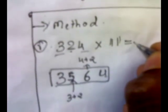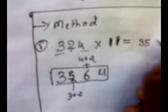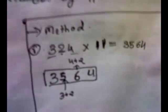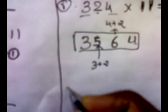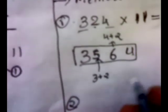So 324 multiplied by 11 is 3564. Isn't it the shortcut method? Here we didn't get any carry for this example. Now we will take another example.